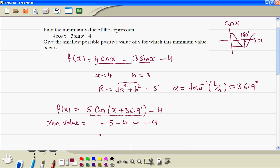So therefore we put x plus 36.9 is equal to 180 degrees, therefore x is equal to 143 degrees.